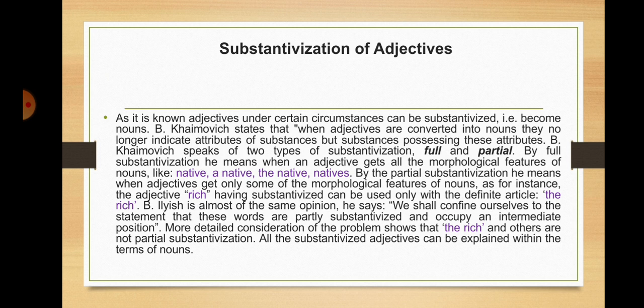The next point of the lecture is substantivization of adjectives. As is known, adjectives under certain circumstances can be substantivized, that is, become nouns. Haimovic states that when adjectives are converted into nouns, they no longer indicate attributes of substances but substances possessing those attributes. He speaks of two types of substantivization: full and partial. By full substantivization he means when an adjective gets all the morphological features of nouns — like 'native': 'a native', 'the native', 'natives'.